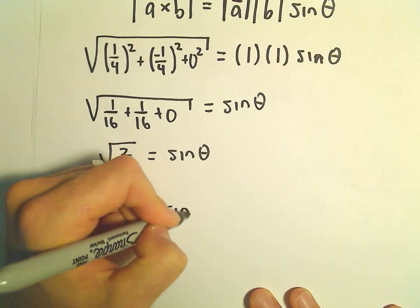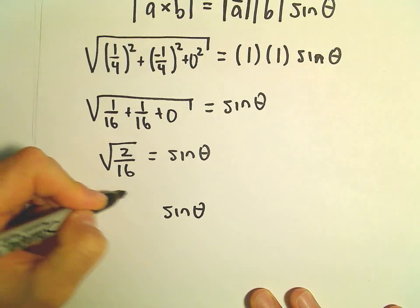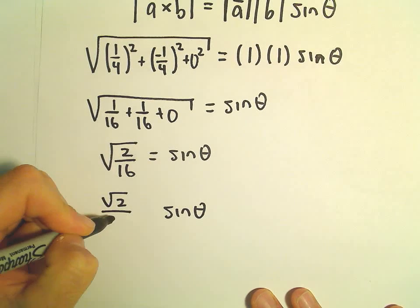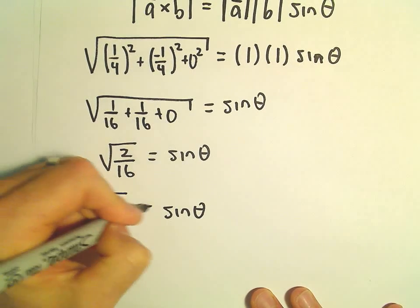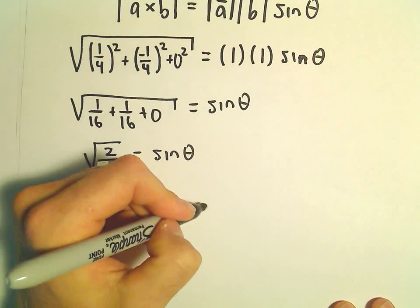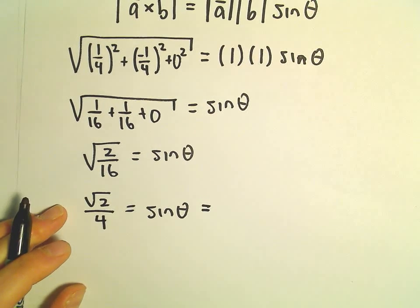We can simplify this a little bit more. We can make this the square root of two over the square root of sixteen, which would be four.